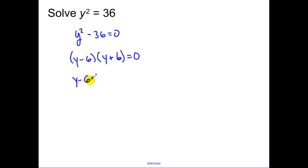So then you set one of your factors equal to zero. We set the other factor equal to zero. So we get our plus and minus six.